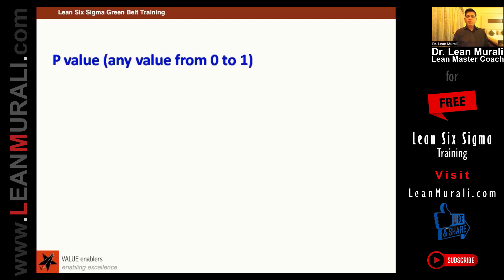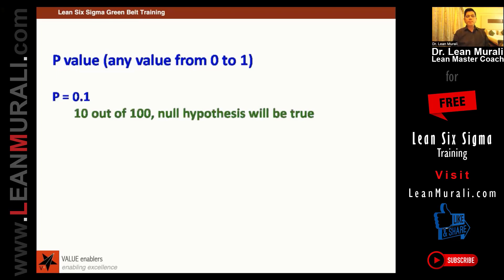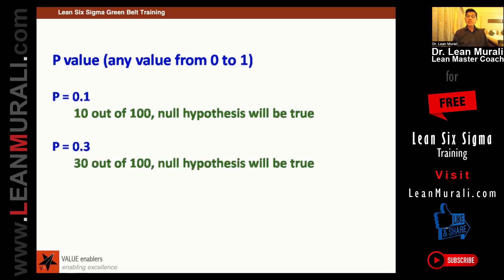Now that we understand the p-value, we know it can be anywhere between 0 and 1 because it is a probability. It can be 0.01 — we said 0.01 means touching the trackpad 1 out of 100 times. So, p-value 0.01 means 10 out of 100 times that the null hypothesis is true. If it becomes low, only 10 out of 100 times the null hypothesis is true. Suppose if it is 0.3, then 30 out of 100 times the null hypothesis is true.